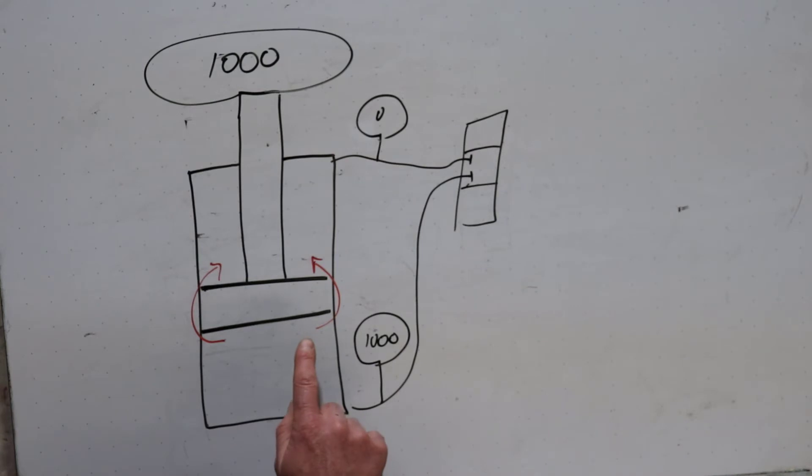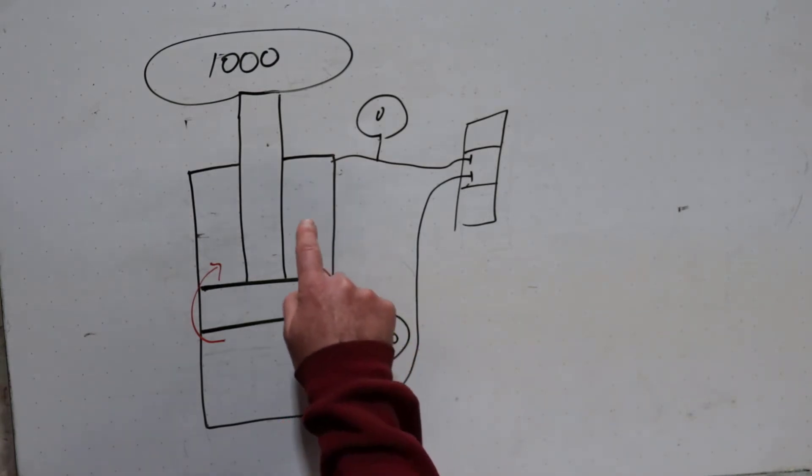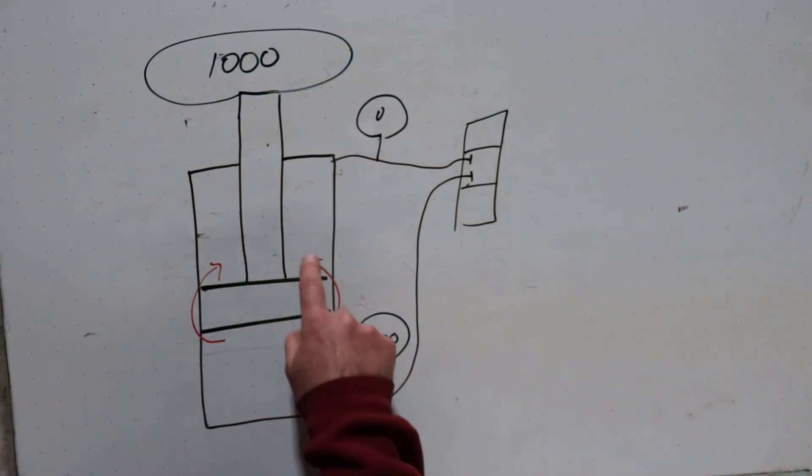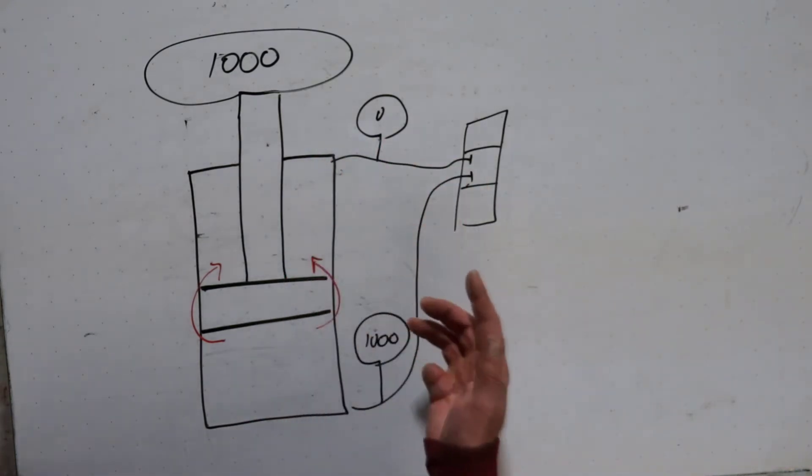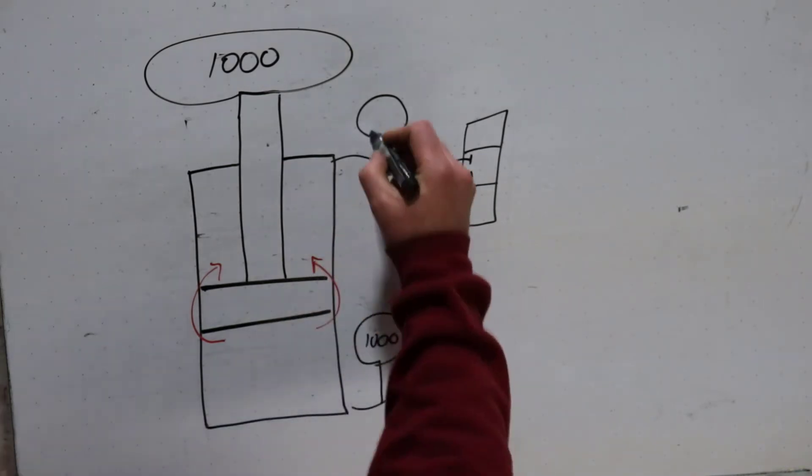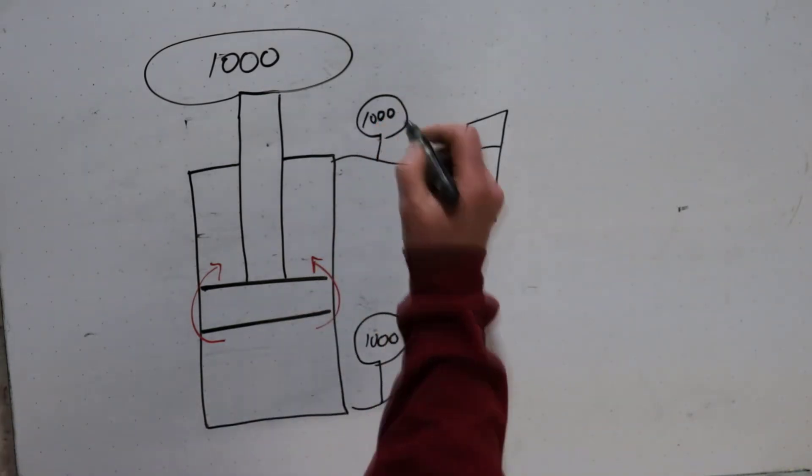But this oil became that oil, or that oil became this oil, however you want to look at it. So if this is a thousand PSI and it leaks across into a closed circuit here, pressures equal and undiminished on all areas, that means this gauge must have also went to a thousand PSI.